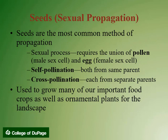Wheat and barley are examples of plants that do not come true from seed. Other plants, such as rhododendrons, azaleas, and apples, do not come true from seed as well.